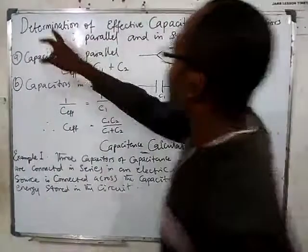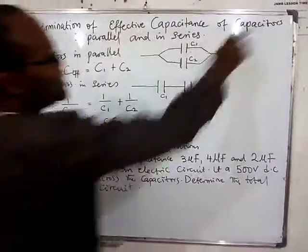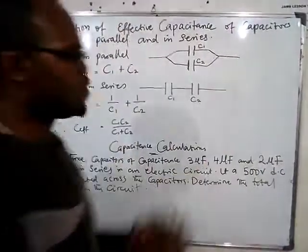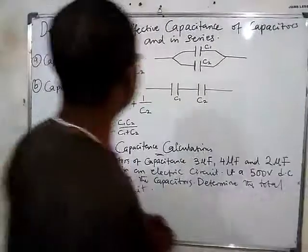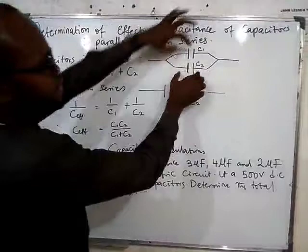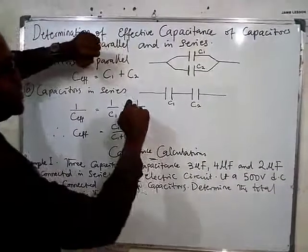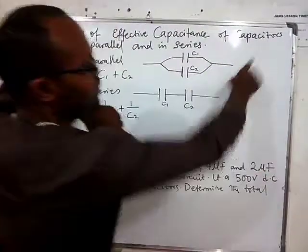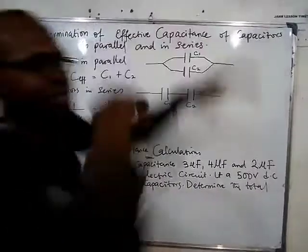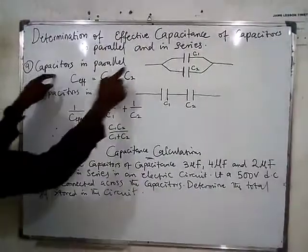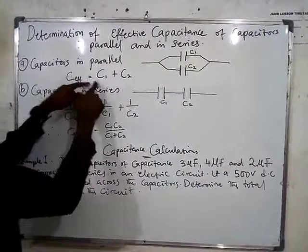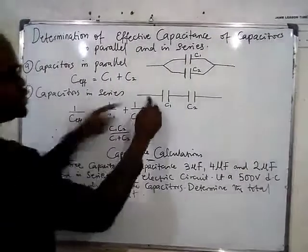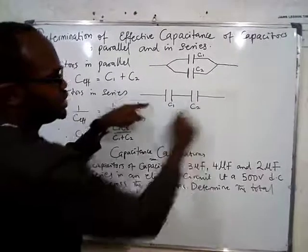Welcome. Today we're going to look at determination of the effective capacitance of capacitors in parallel and in series. You remember when we are doing resistance of resistors, we say that when connected in parallel, it would be 1 over R1 plus 1 over R2. But for capacitance it is the reverse — for parallel connection, the effective capacitance equals C1 plus C2.